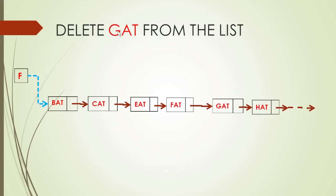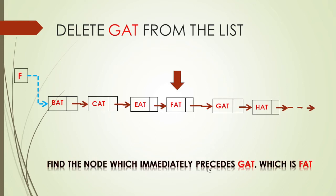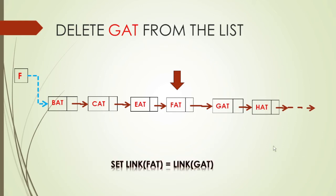To delete a node 'gat' from the list: find the node which immediately precedes 'gat', which is 'fat'. Then set the link of 'fat' equal to the link of 'gat' — since 'gat' points to 'hat', that address will now be stored in 'fat's link field. So 'fat' now points directly to 'hat', and the connection through 'gat' is no longer valid. The node 'gat' is then returned to the storage pool.